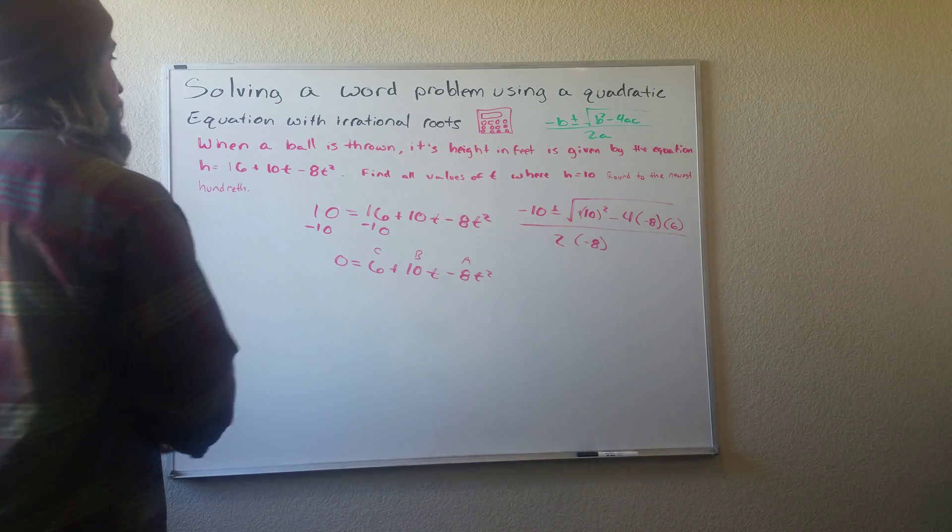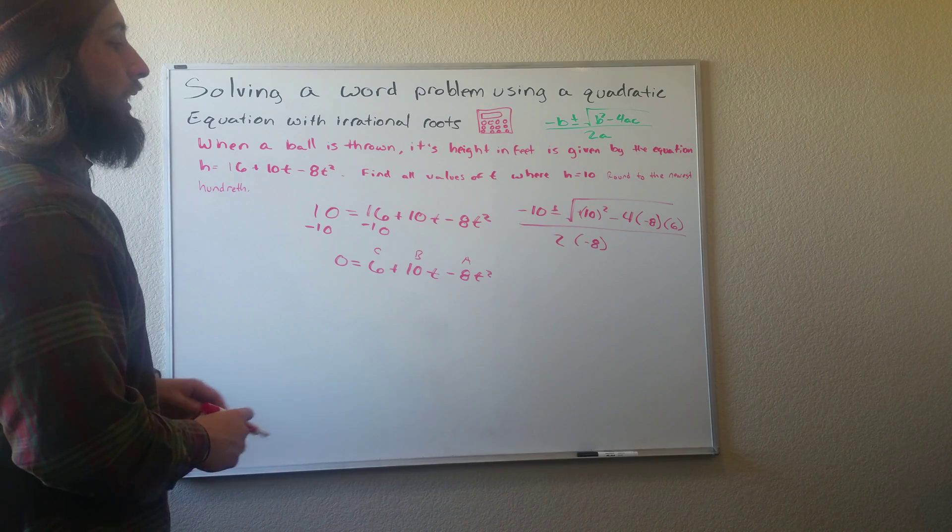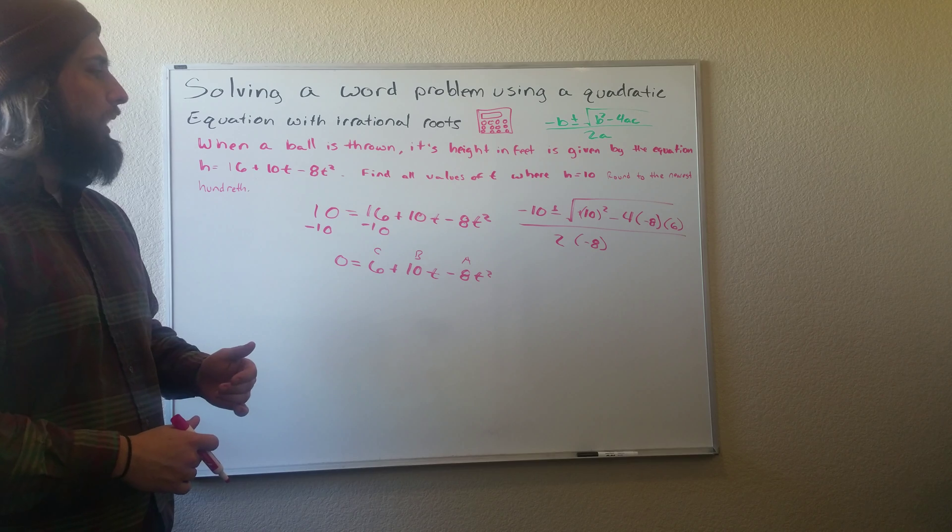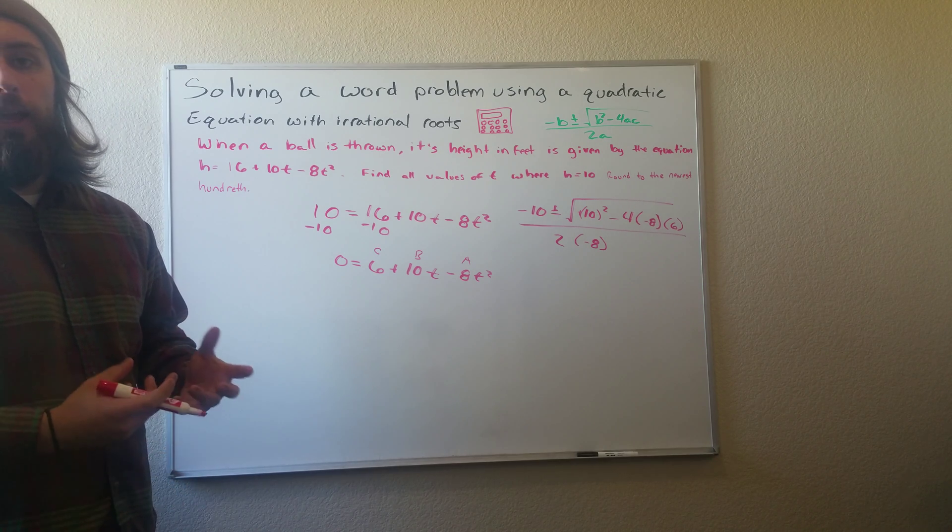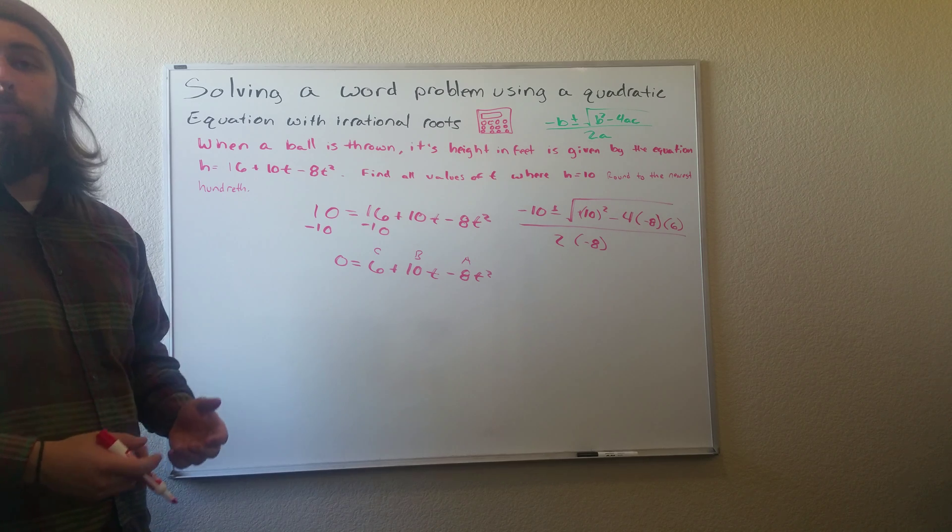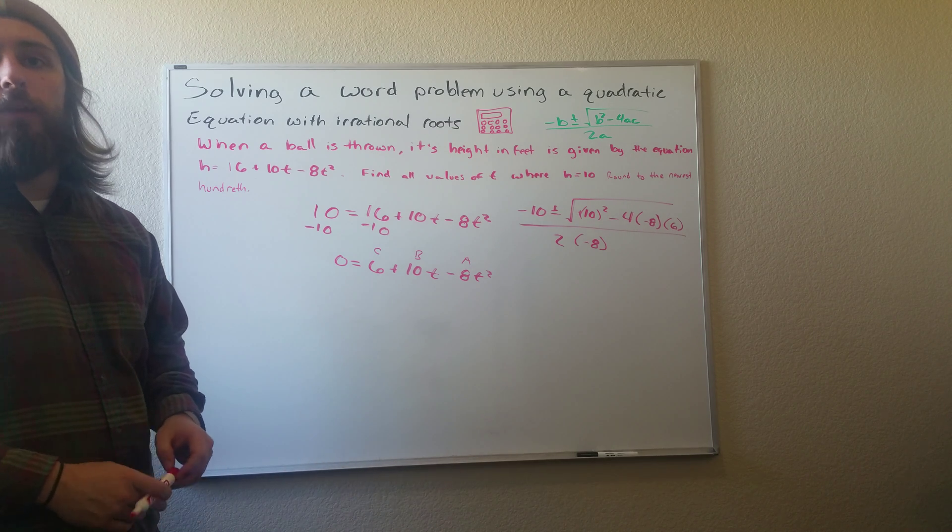So from there, you're just going to plug it into your calculator, you'll get two values. And in this case, one will be negative and one will be positive. And if it is negative, it can't be a possible answer because time can't be negative.